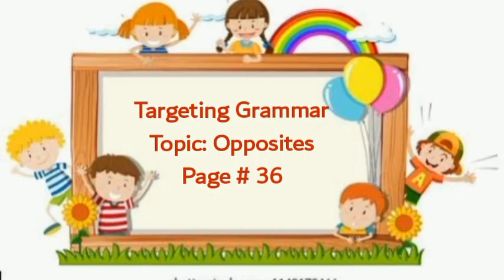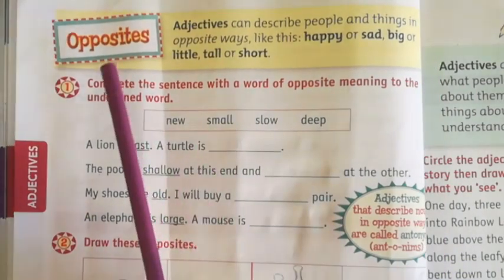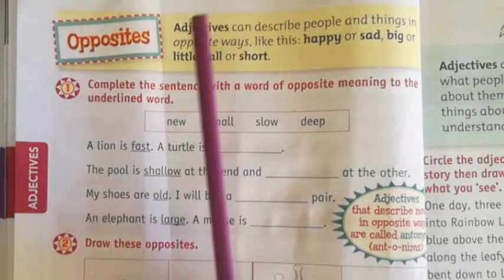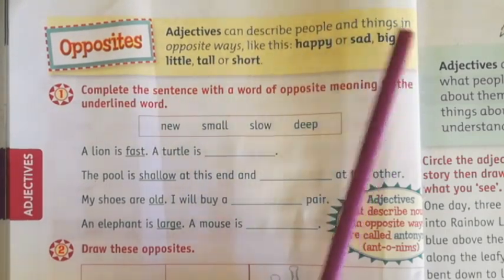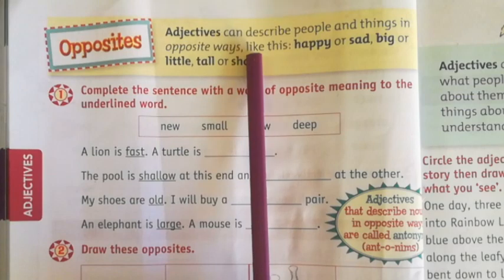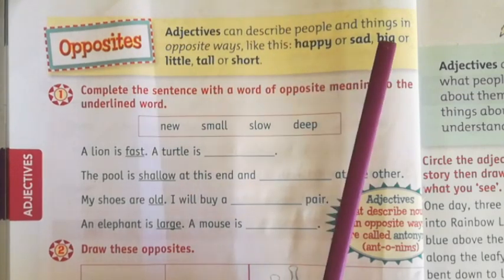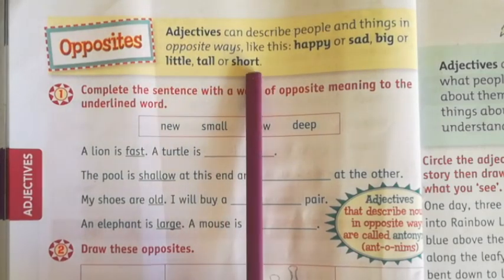Students, now open your Targeting Grammar book, topic opposites, page 36. Let's see the definition: adjectives can describe people and things in opposite ways, like happy or sad, big or little, tall or short.